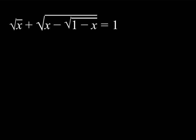I'll be presenting two methods here — first, the cooler one. We're going to check the domain of this function. For example, here we have square root of x, which means x needs to be greater than or equal to 0, and this implies that x needs to be less than or equal to 1.